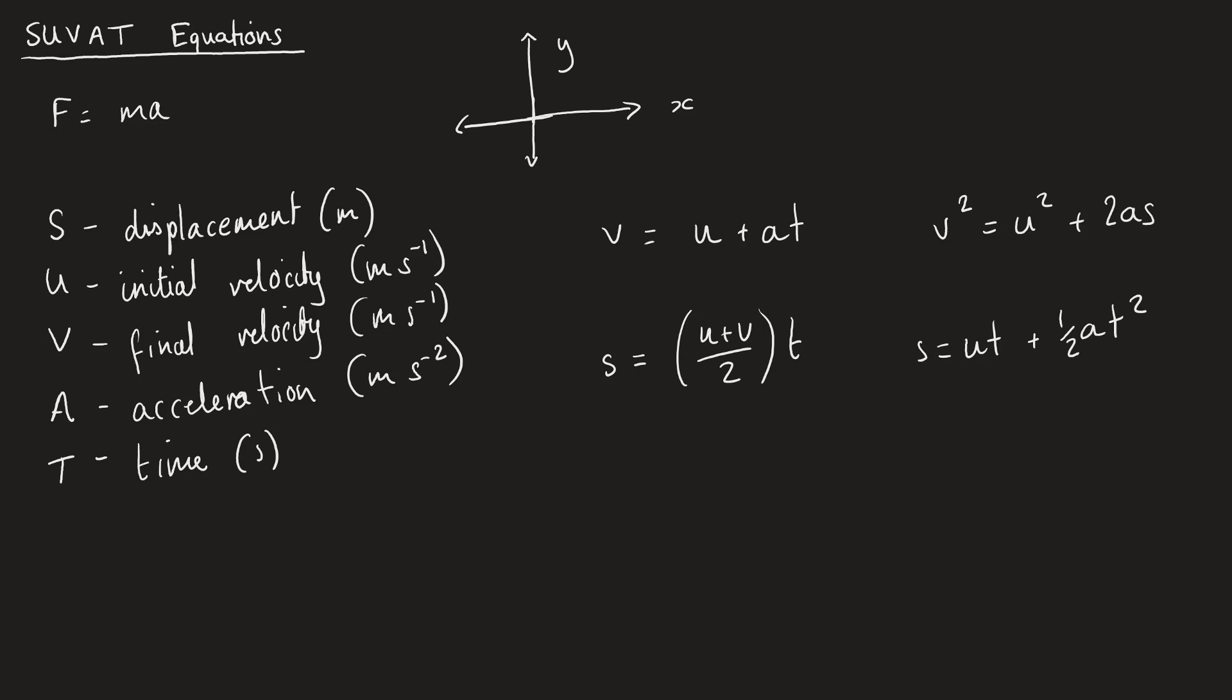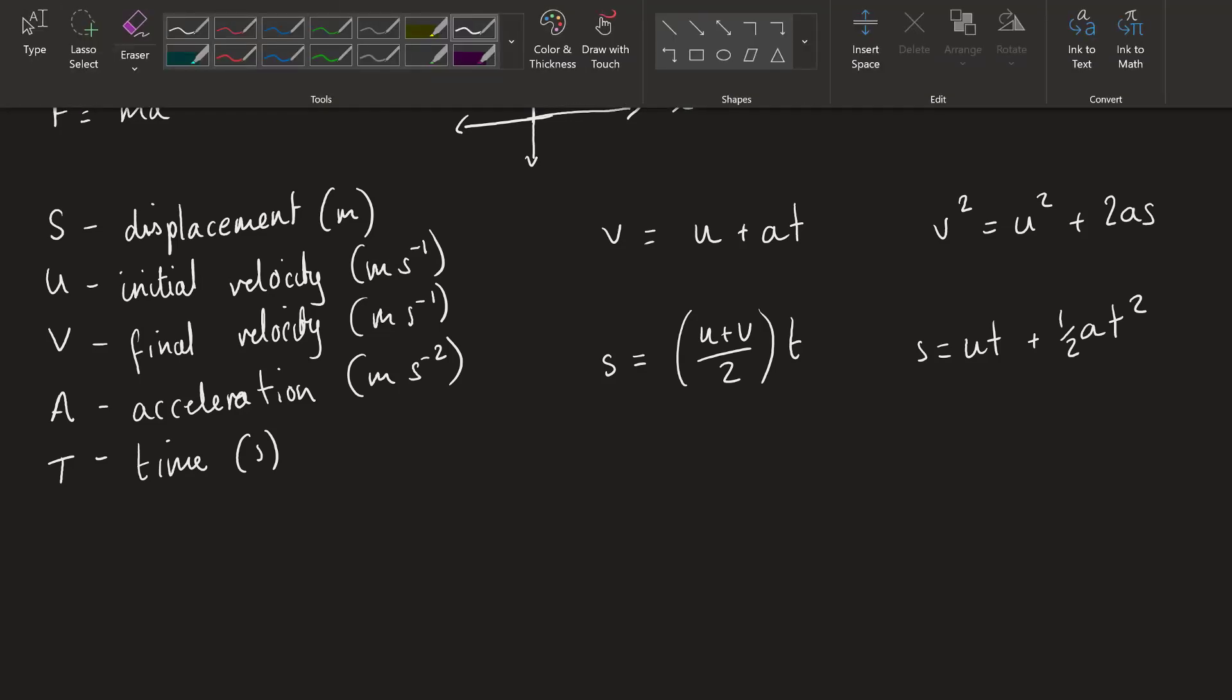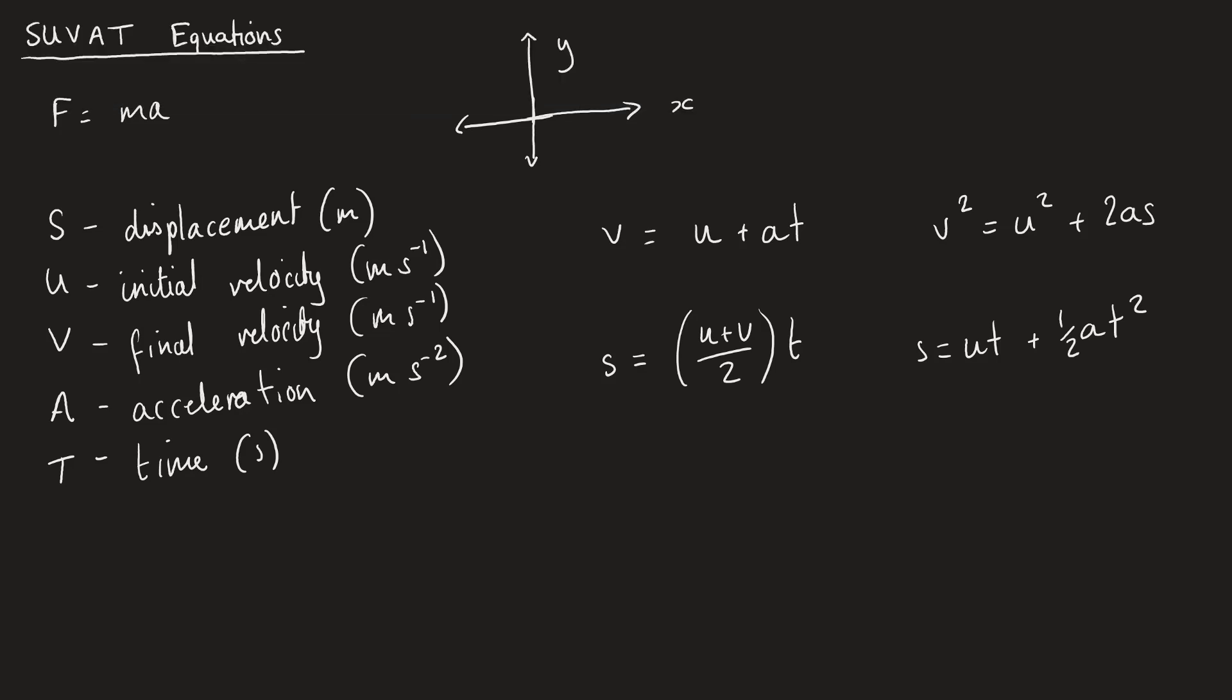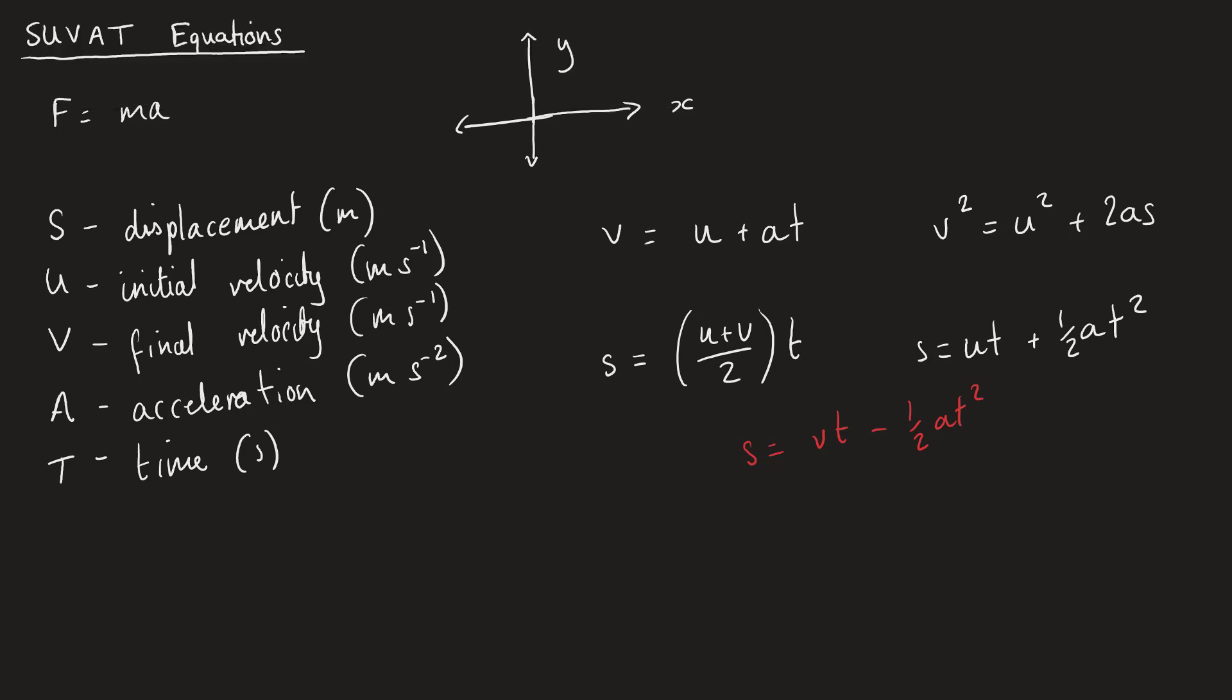The fifth one that is kind of the secret one, unless you're doing a mechanics module in maths, is actually that you could also write S is equal to VT minus a half AT squared. Now, this one you'll never have to know. But just like I said, just for completeness, we're going to look at all five of them as the full set of SUVAT equations. And you can always use this one if you're having trouble, but you shouldn't ever need to, and so you should be able to do it with these.